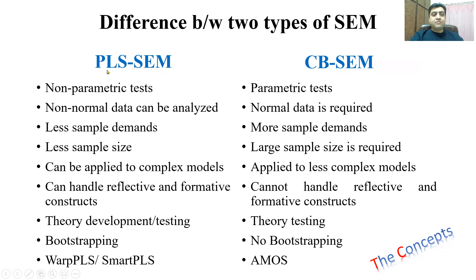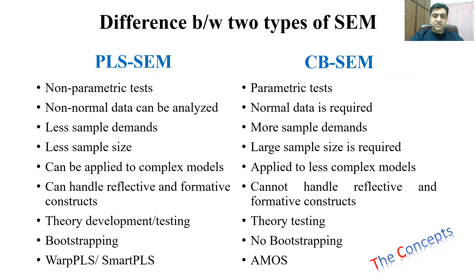In PLS-SEM it is not a very strict requirement to have a large sample size, and there are fewer other demands. PLS-SEM does not demand much about sample size and other sampling issues. But covariance-based SEM requires a lot of demands related to your sample. PLS-SEM can be used for smaller sample sizes — sometimes you don't get enough sample to use CB-SEM, so you can always use PLS-SEM.